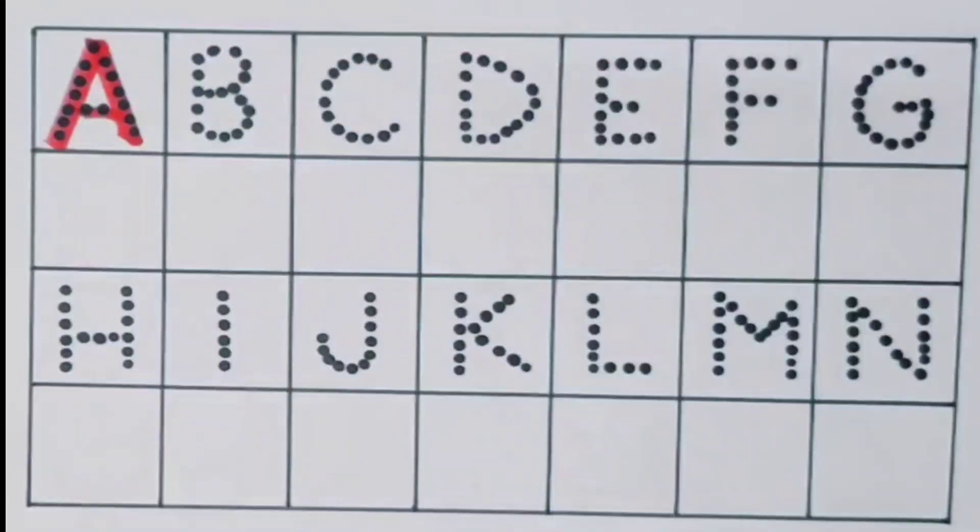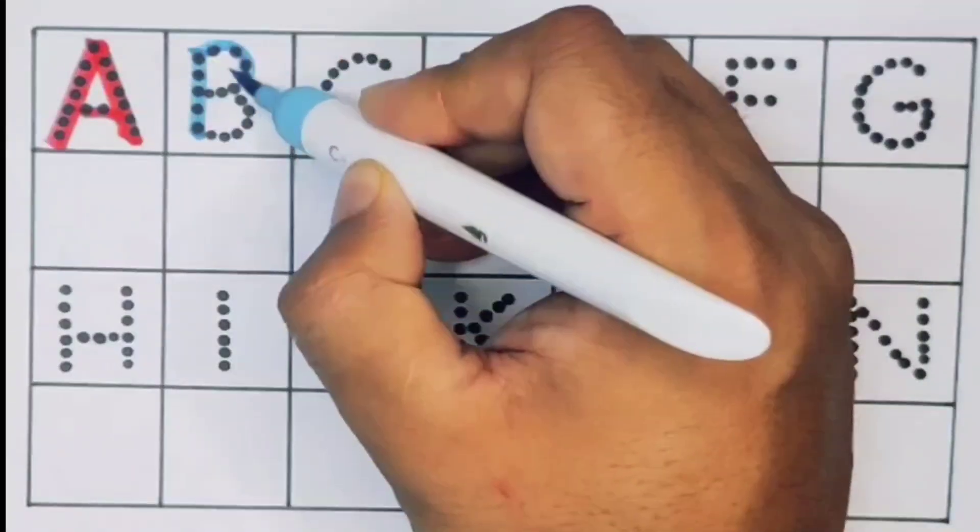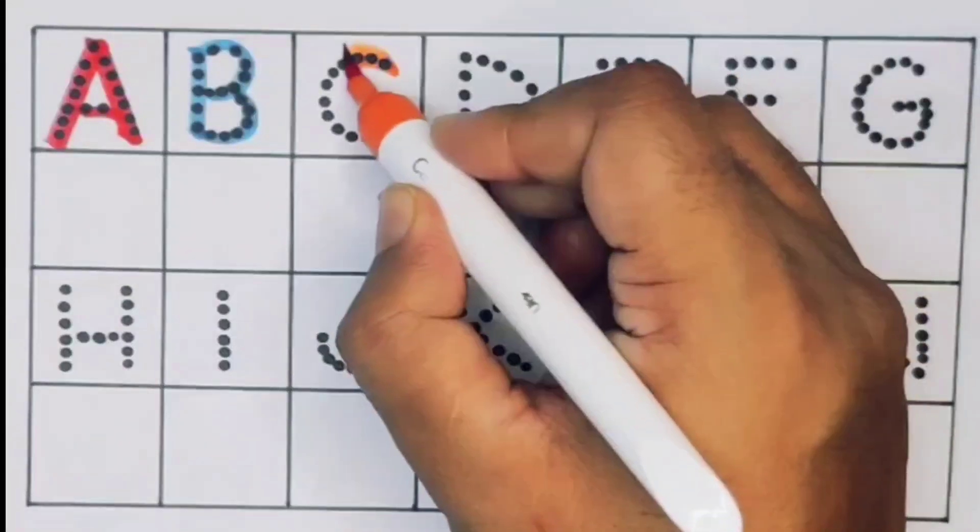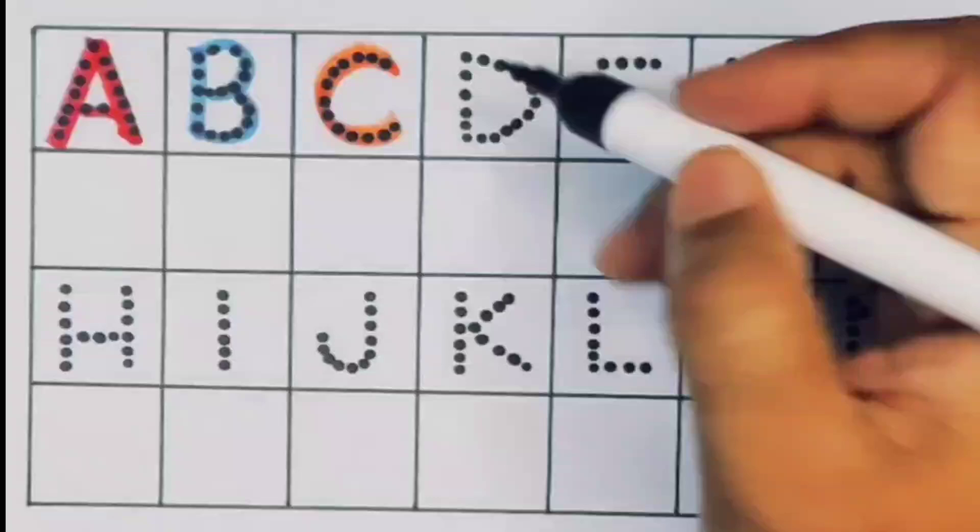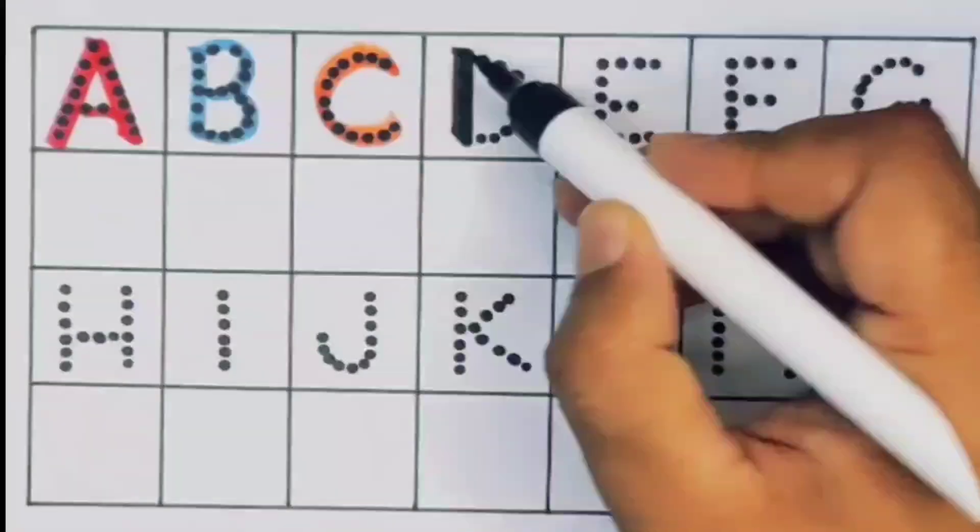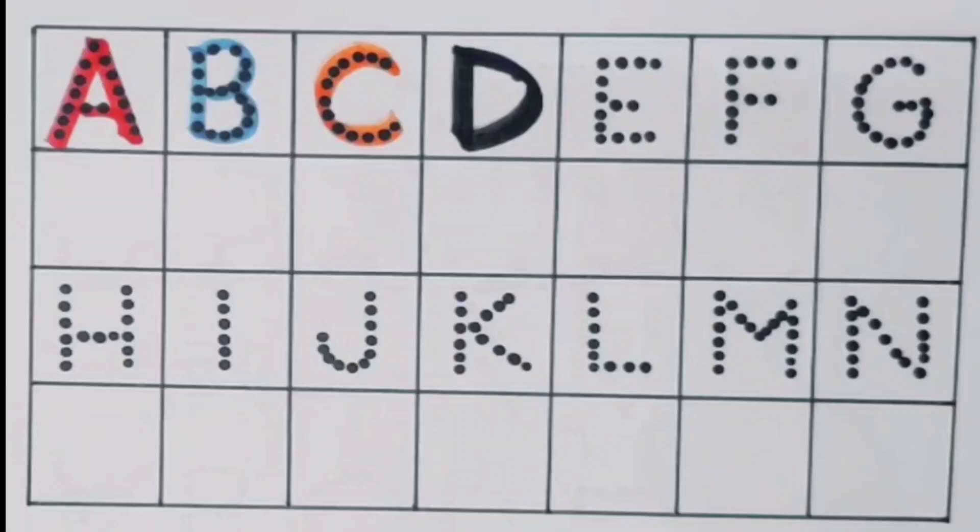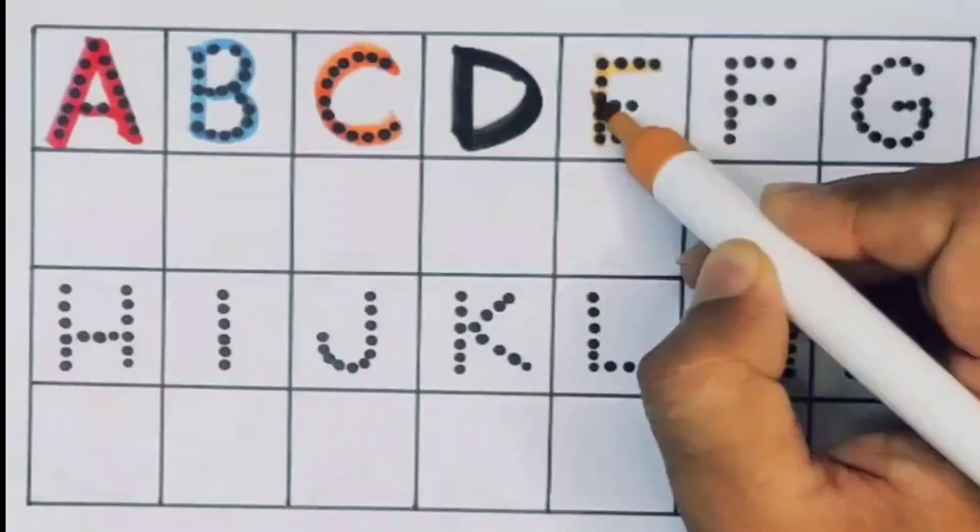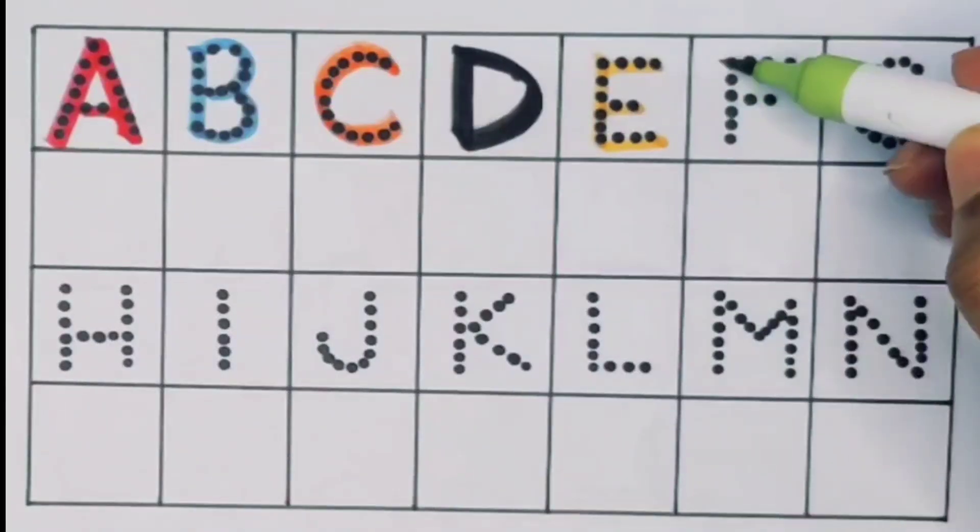Next kids, B, B for bus. Next kids, C, C for cow. Next kids, D, D for drum. Next kids, E, E for egg. Next kids, F, F for fire.